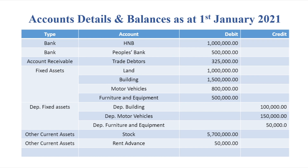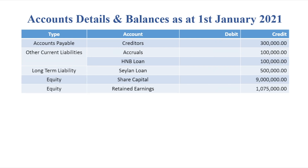Accounts, details and balances as of 1st January 2021. The chart of accounts includes bank accounts, fixed asset accounts, accumulated depreciation, current asset accounts, rent advance, payable accounts, current liabilities, HNB loan, long-term liabilities, salon bank loan, equity accounts, million accounts, payments, return and share capital.